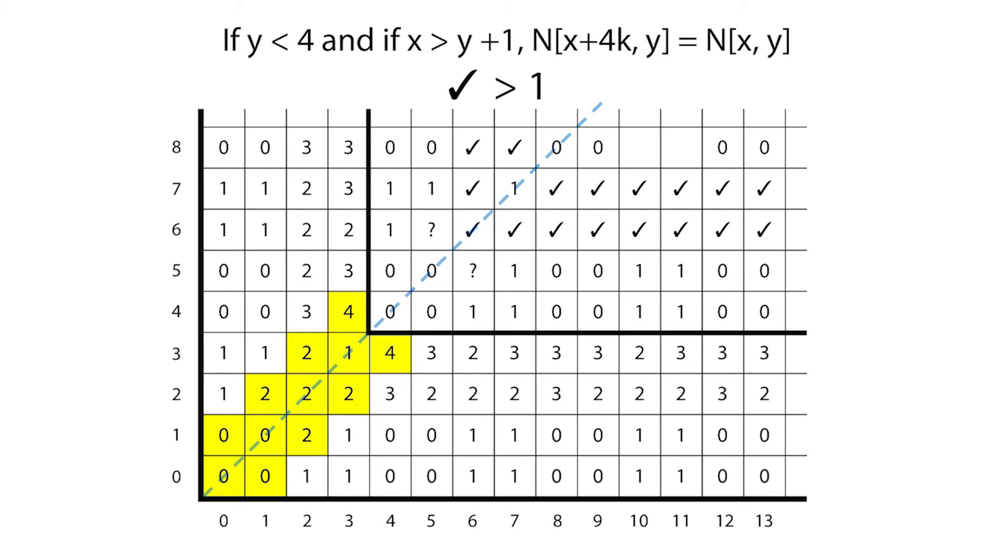We next review the question mark on row five. Since its followers are one, zero, three, and three, its value is two.